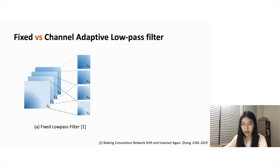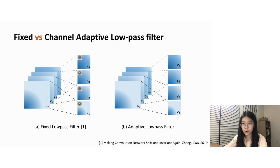Given a feature map, it is straightforward that the content varies across spatial location. Furthermore, different feature channels can also have different frequencies. For example, certain channels capture edges, others capture color blobs. A fixed low-pass filter will still apply the same handcrafted low-pass filter on each channel. But for our adaptive filtering approach, filter weights are adjusted on both spatial and channel dimensions. At the same spatial location, each channel will be applied different low-pass filters, as shown in Figure B.